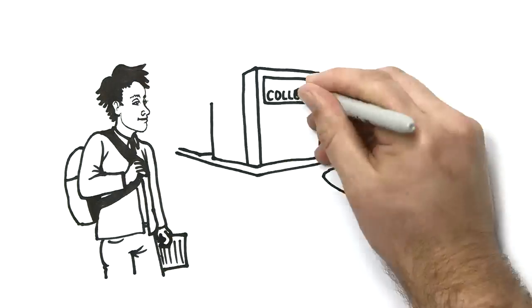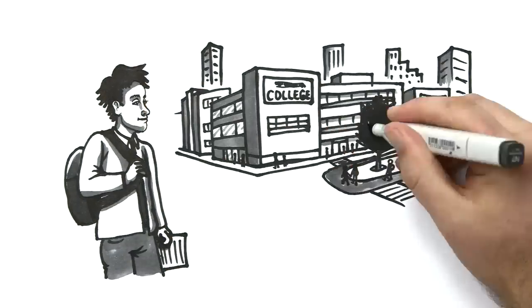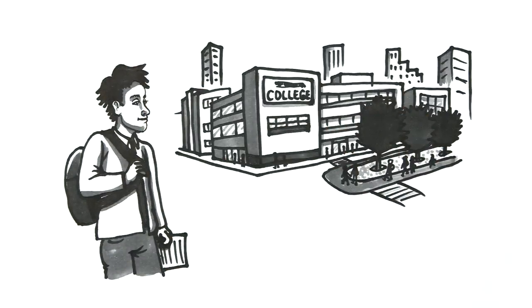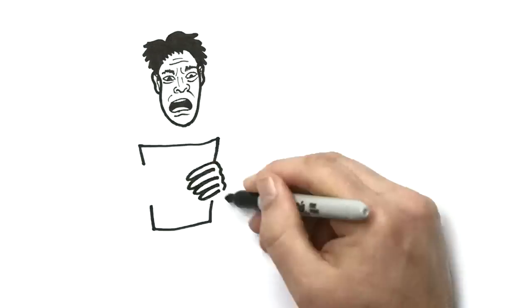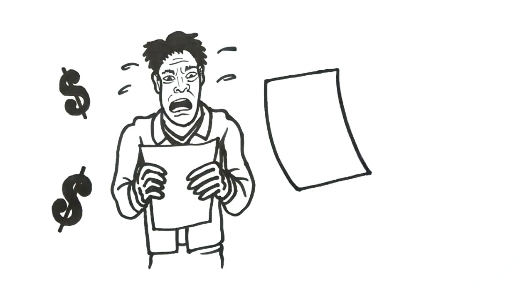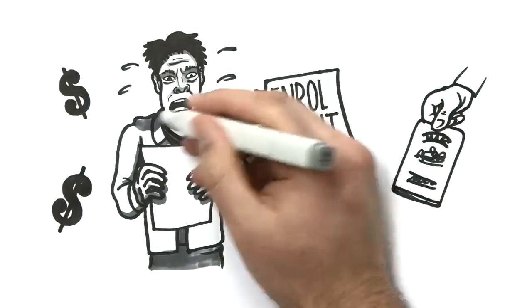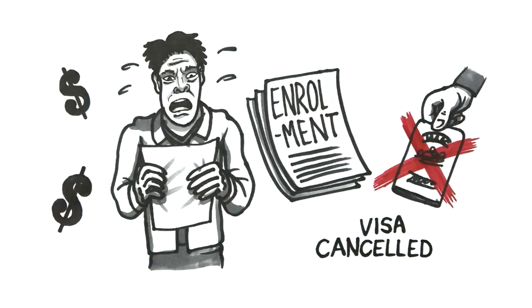If you think something is wrong or unfair, or the rules haven't been followed correctly, talk to your college first. You can make a complaint about refunds and fees, cancelling or changing your enrollment, or for an intention to report you to immigration for failing to meet attendance or course requirements.